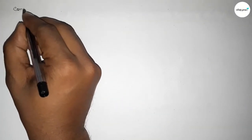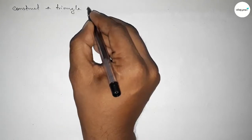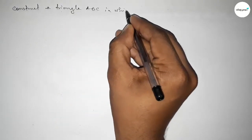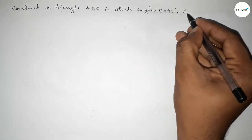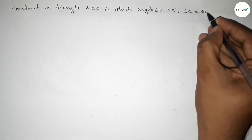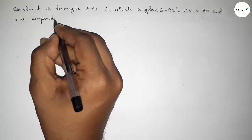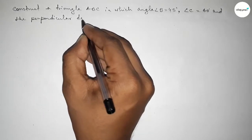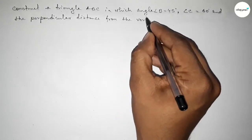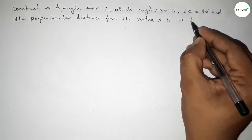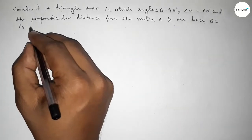Hi everyone, welcome to SI Share Classes. Today in this video we have to construct a triangle ABC in which angle B equals 45 degrees, angle C equals 60 degrees, and the perpendicular distance from vertex A of the triangle to the base BC equals 4.5 centimeters.